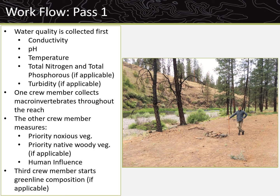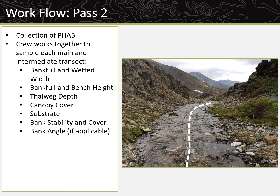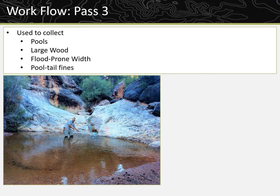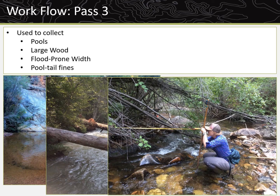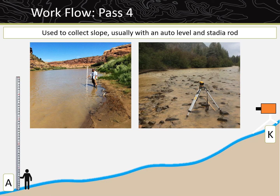If a field botanist is present, start assessing green line vegetation composition. The second pass is used to collect PHAB data where the crew works together to collect widths, heights, transect thalweg depth, canopy cover, substrate, bank stability and cover, and bank angle. The third pass is used to collect pools, large wood, flood prone width, and pool tail fines. On the fourth pass, slope is measured. For more information about Lotic AIM field methods, consult Technical Reference 1735-2 and attend one of the field methods trainings that occur in spring of year.